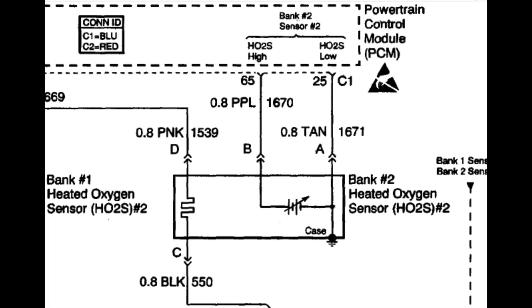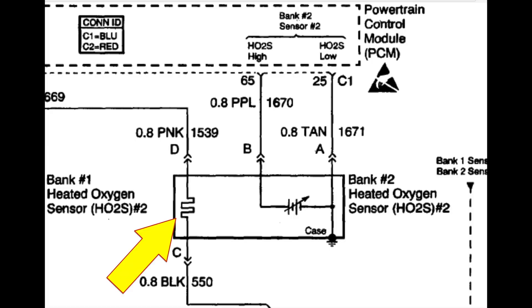Notice the two strange symbols inside the oxygen sensor. One is a symbol for a battery with a diagonal arrow through it, indicating that the voltage output varies — because it is a battery. When these things get really hot, either from the adjacent heat of the catalytic converter or the heater, the catalyst inside triggers a voltage difference across the two wires that the PCM uses to estimate how much oxygen is present.